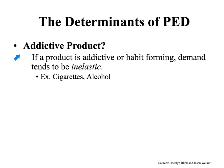And lastly, the fifth determinant of demand: how addictive is the product? Is it cigarettes, alcohol? If a product is addictive or habit-forming, demand tends to be inelastic. Think about someone you know who has smoked for years and years — the willingness and ability of that person to buy cigarettes remains high. Super inelastic, even though people keep paying more and more money every year for cigarettes, largely as a result of taxes.